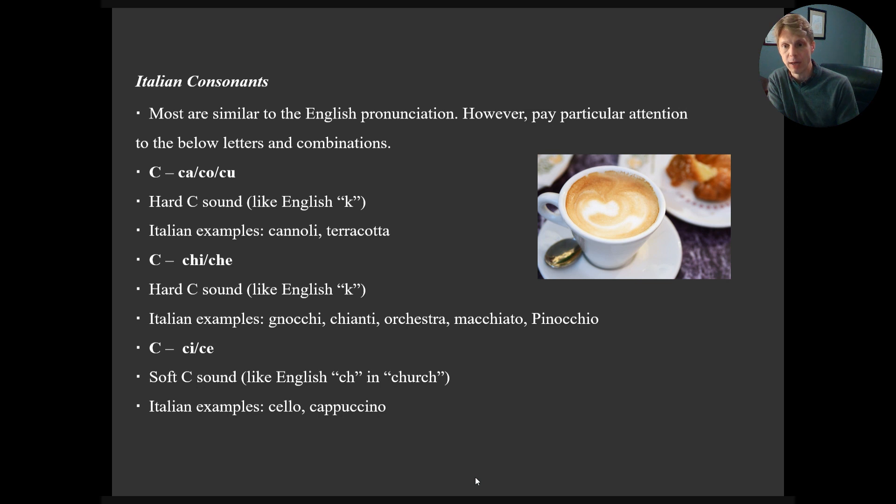Then we have an H, which we put in front of an I or E to maintain a hard sound. That's pretty easy to remember by thinking H hard, because if we don't, it becomes a soft sound. And I'll explain in just a minute. So what are some Italian examples of this? We have gnocchi, chianti, as in chianti, orchestra, or orchestra, as we would say in Italian. Macchiato, macchiato, pinocchio. So you can see they're all hard right there.